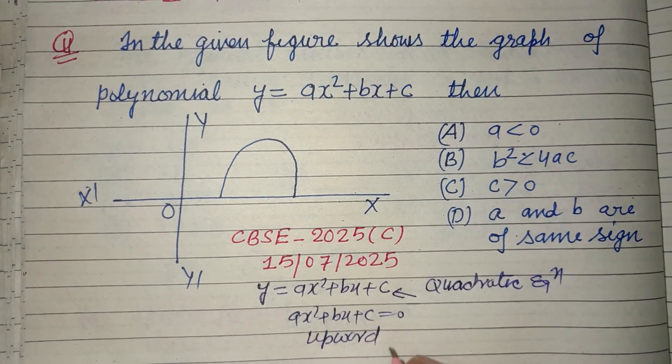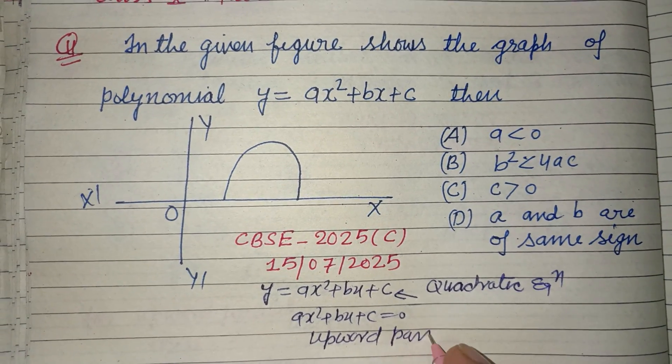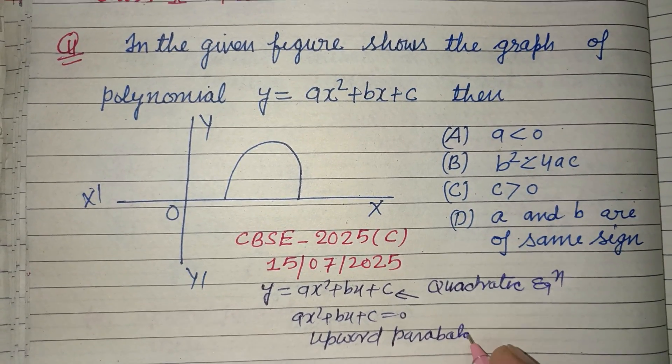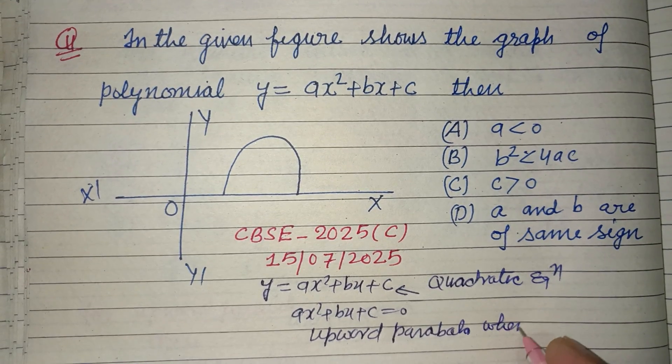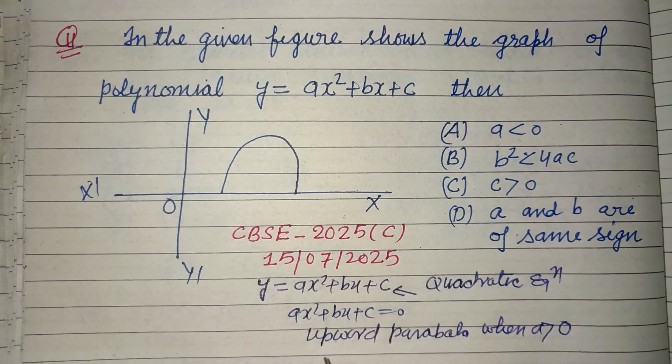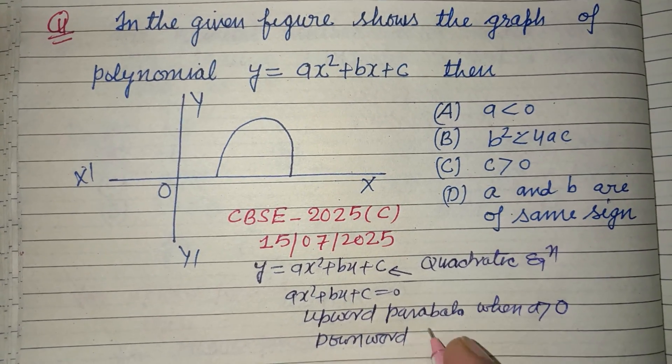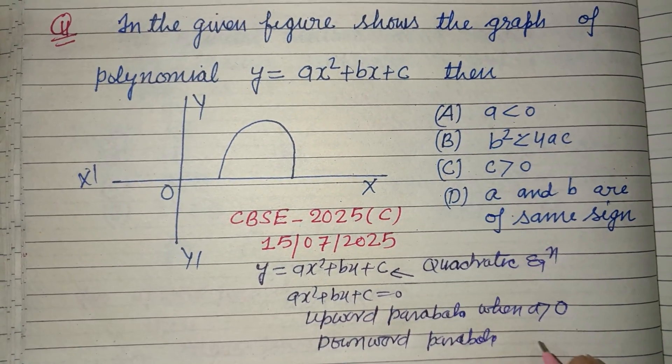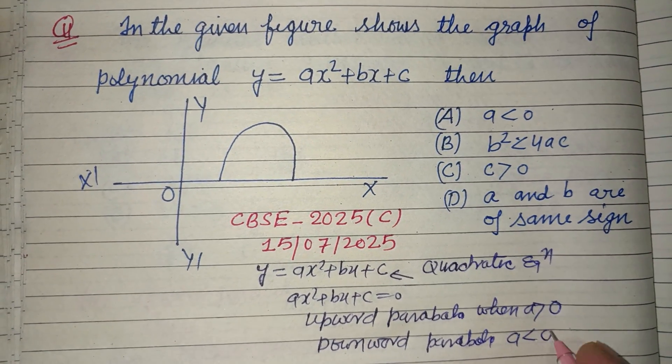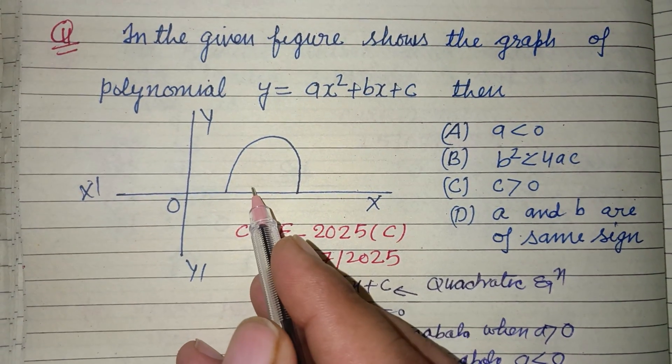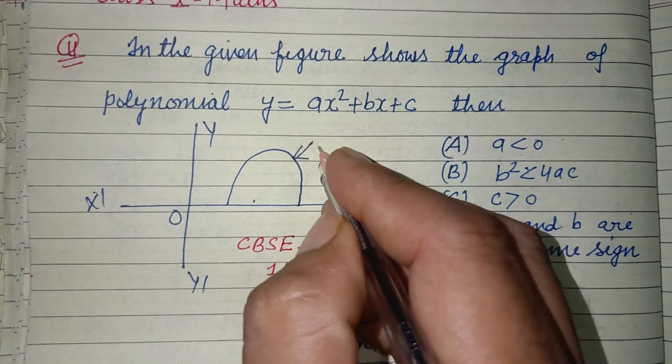on the graph. Upward parabola when a is greater than 0, downward parabola when a is less than 0. And here, downward parabola is given.